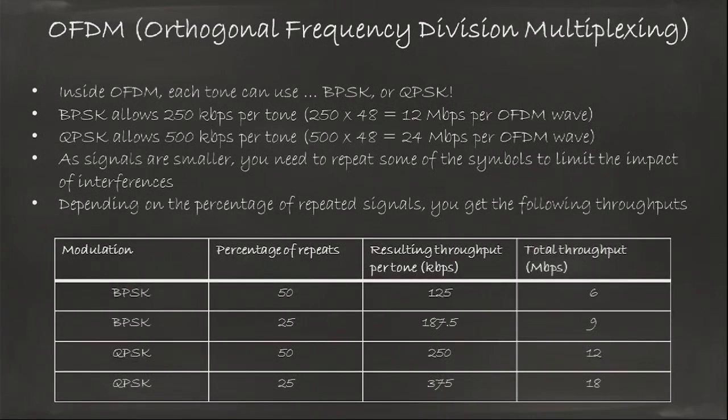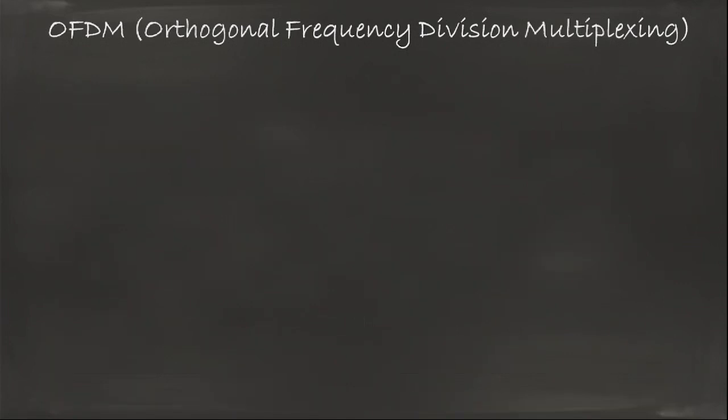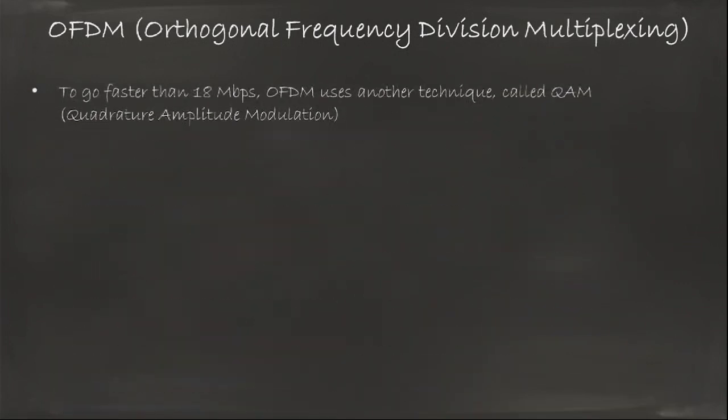The way you read OFDM is typically to read the modulation, BPSK, QPSK, and then decide the percentage of repeat, 50%, 25%, and that gives you a throughput per tone times 48, that gives you the entire speed of your communication. You can get 6, 9, 12, and up to 18 megabits per second with QPSK and 25% repeat. That's pretty good, but in a world where wired communications go at 100 meg per second, that is not good enough. We need to find another way to be even faster.